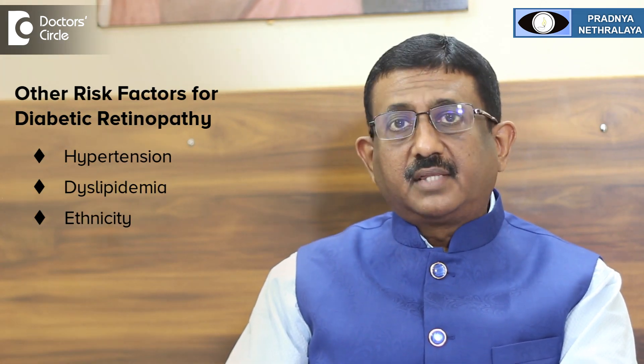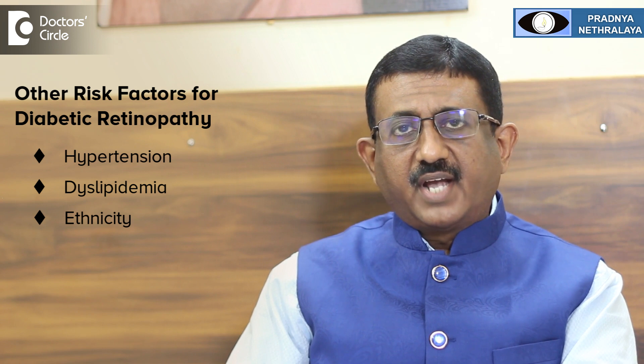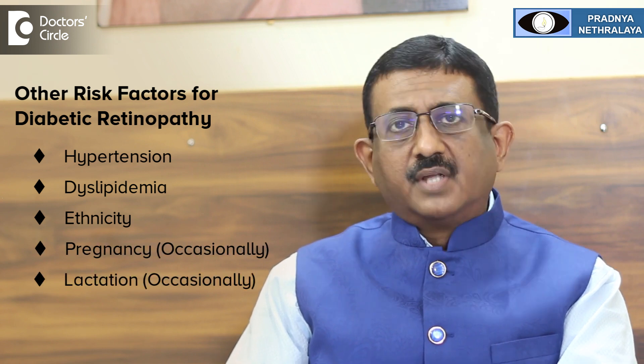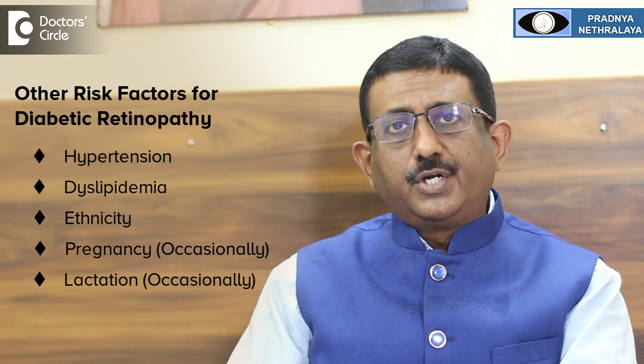People with long-standing diabetes mellitus and people with uncontrolled diabetes mellitus are at risk. Other risk factors include hypertension, dyslipidemia, and ethnicity. Occasionally, it can occur during pregnancy and lactation. The most important factors are duration of diabetes and uncontrolled diabetes.